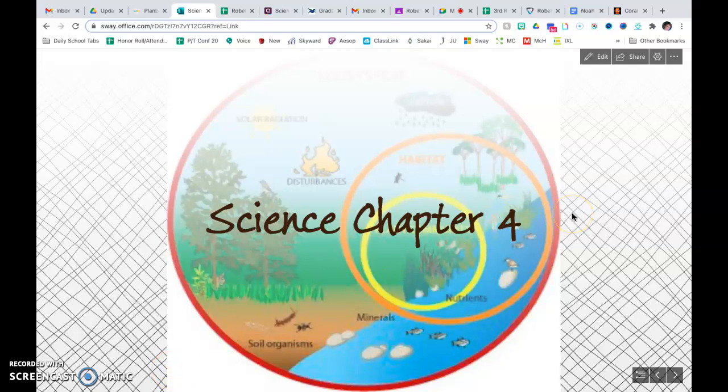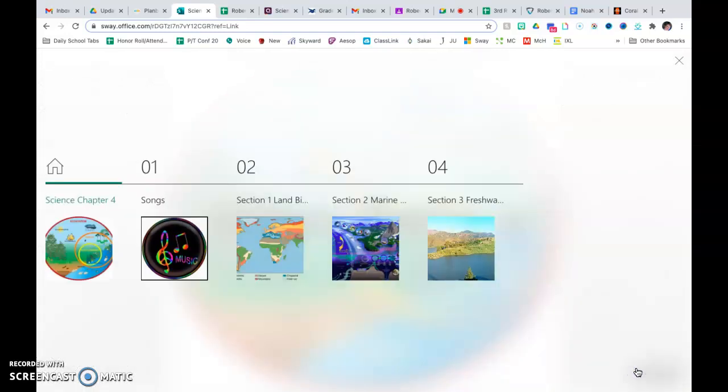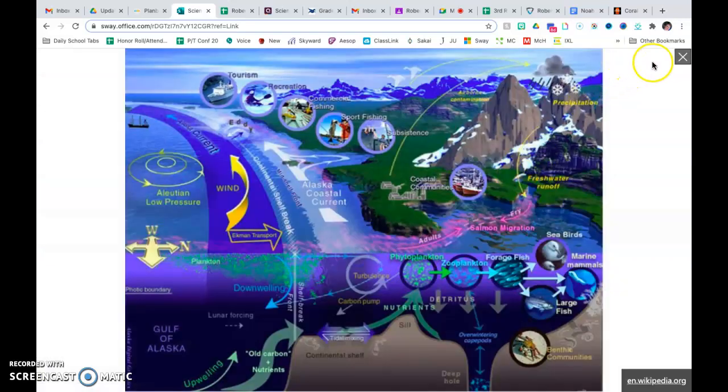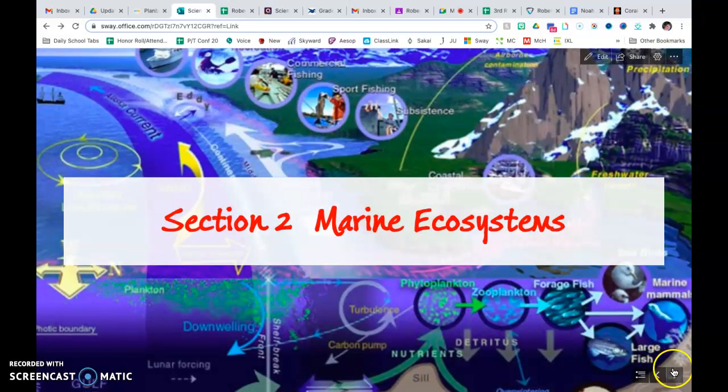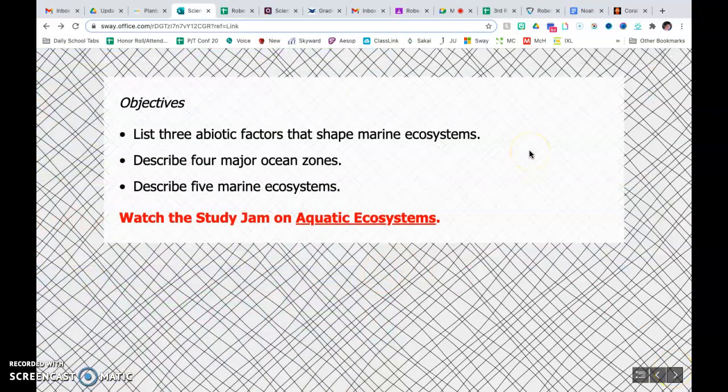We are going to continue our study of Science Chapter 4 today with Lesson 2, Marine Ecosystems. We have three objectives for today's lesson. At the end of the lesson, you should be able to list three abiotic factors that shape marine ecosystems, describe four major ocean zones, and describe five marine ecosystems.